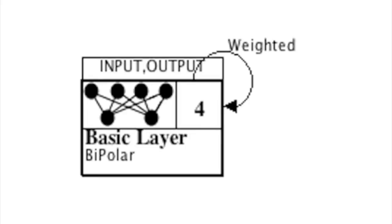Now let's look at examples of a couple of neural networks architected in NCOG so you can see how they would be constructed. We'll start with the Hopfield neural network as represented in the NCOG workbench. The Hopfield neural network is very simple — in this case we have four neurons, though you could have more. It's a self-connected neural network: you have one layer that is connected to itself, so this layer is both the input and the output layer.